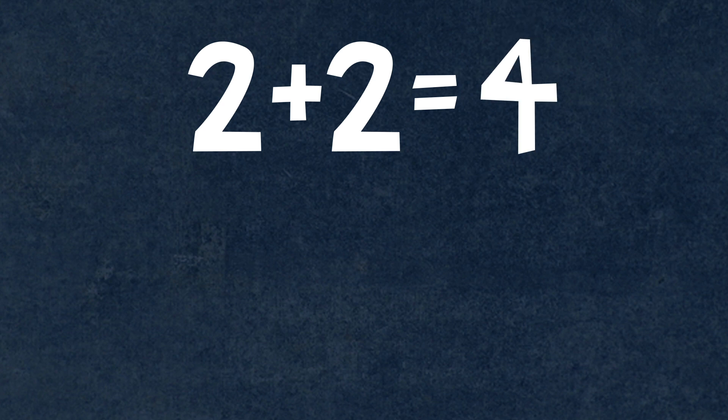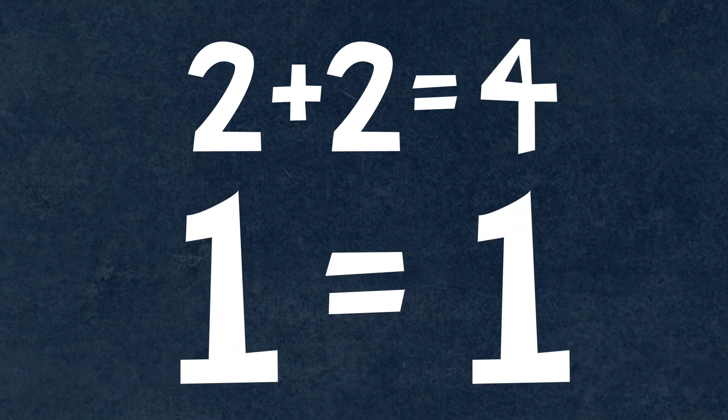But what does that have to do with math? In math, everything is certain. Two plus two equals four, and one is just one. But that's not really right. One isn't always one. Here's why.